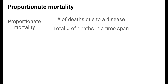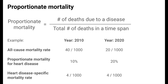We have to be careful to not misinterpret proportionate mortality as risk of death. To clarify this, let's look at an example. Suppose that we have mortality measures on a population in 2010 and 2020. The all-cause mortality rate in 2020 is half the level in 2010, but the proportionate mortality for heart disease in 2020 is twice what it was in 2010. If we look at this increase in proportionate mortality and conclude that the risk of dying from heart disease is increasing, this would be an incorrect conclusion.